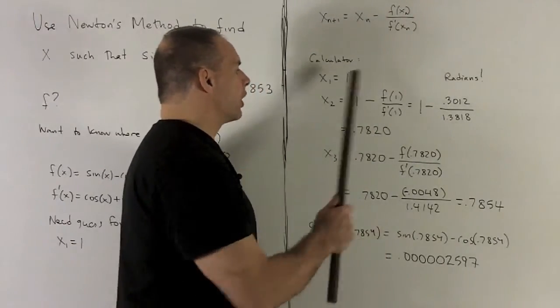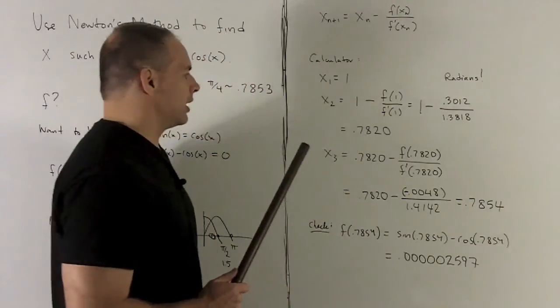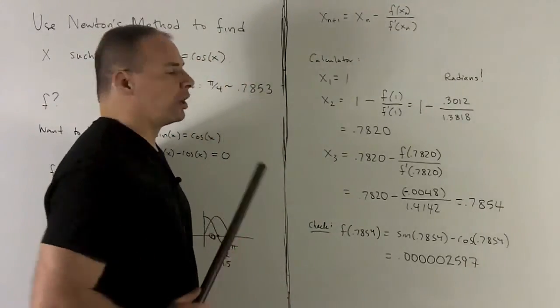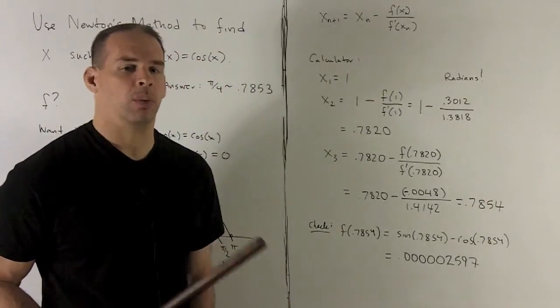So on my first iteration, I get 0.7820. And you notice we've already got our answer down to the hardest place with one shot.